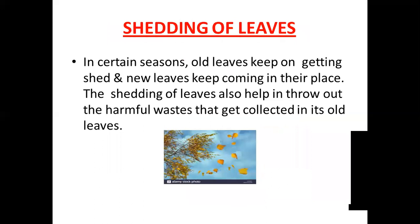Next one is shedding of leaves. In certain seasons of the year, we see very many leaves lying on the lawns and the roads. Usually we can observe these in the month of February and March. This shows that the leaves of the plants are not permanent. They remain on the plant only till they are able to perform their function well. When they become old, the plants shed them off. We can observe clearly the old leaves shedding off from the plant.